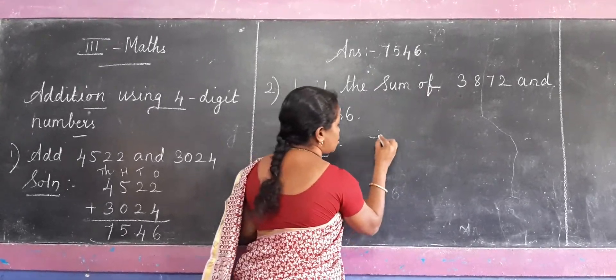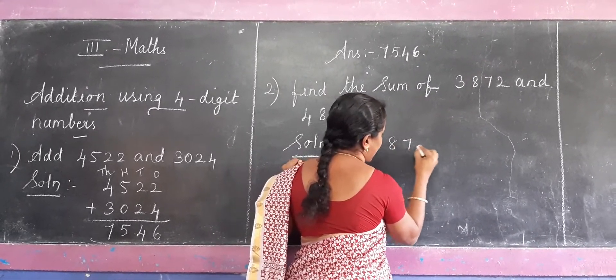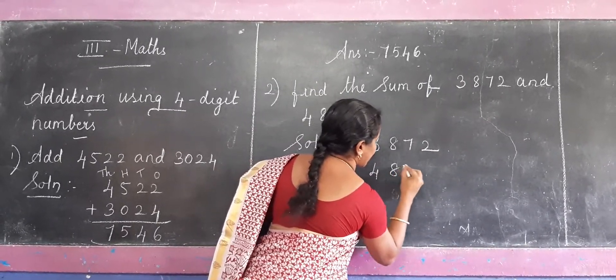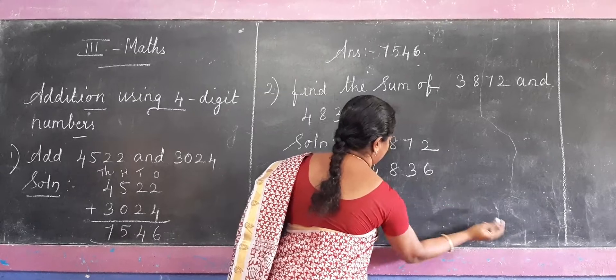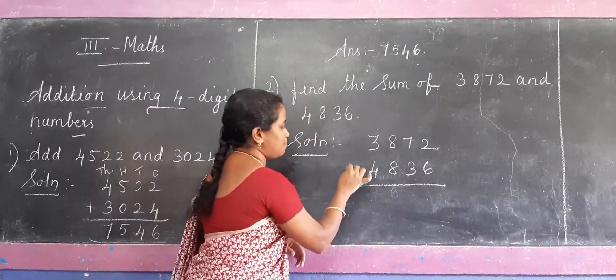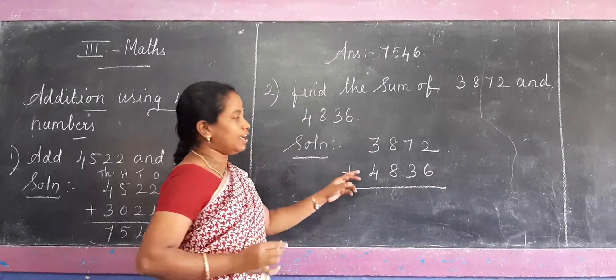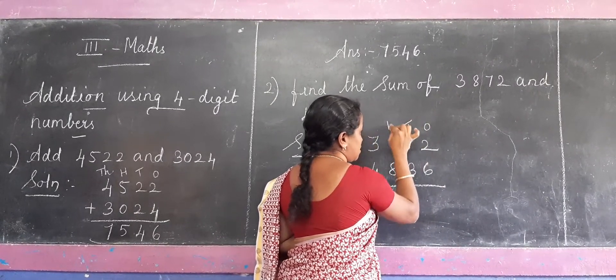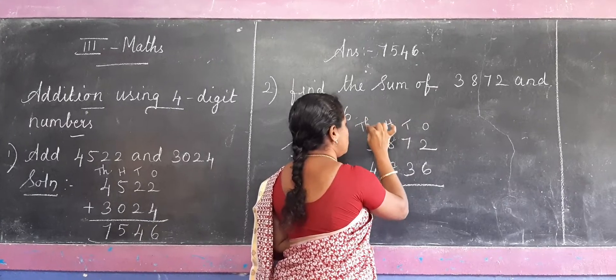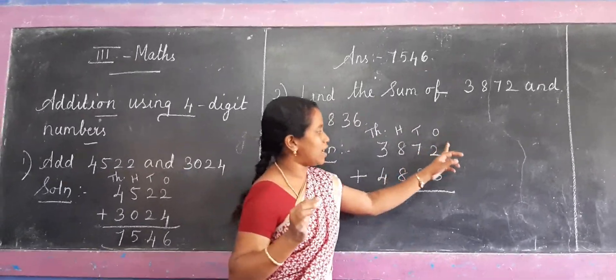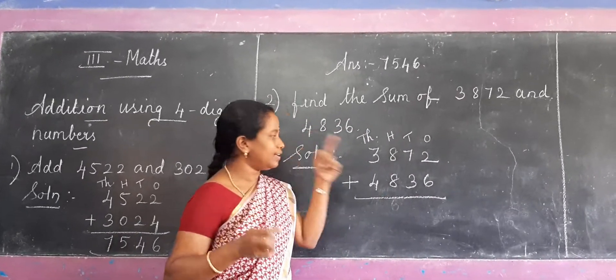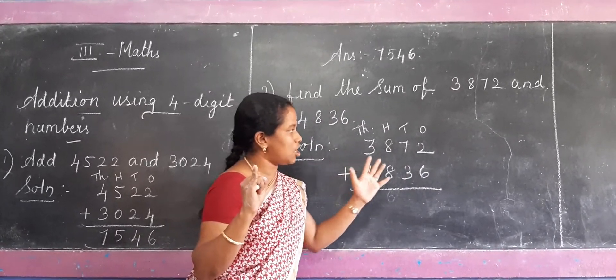Solution. So, sum add. First number, 3,872, next number 4,836. So, addition plus simple. Now place value, once, tens, hundred, thousand. Next, one's place first.